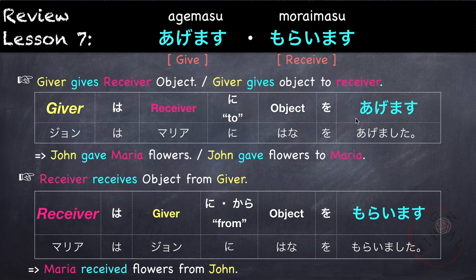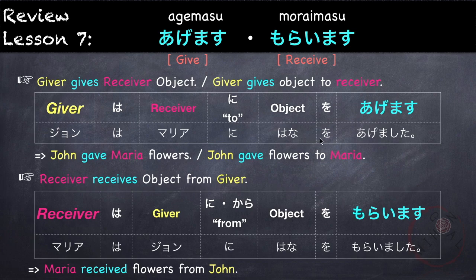So remember: if the verb is agemasu, the topic is the giver. If the verb is moraimasu, the topic is the receiver. You may also change the order of the sentence. For example, John wa hana o Maria ni agemashita, or Maria wa hana o John ni moraimashita.